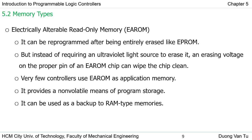The next type is EEPROM, which is similar to EPROM but instead of requiring UV light to erase data, it requires an erasing voltage to clear the data. Very few controllers use this type as the application memory. This type of memory is non-volatile, meaning data is stored permanently until we intentionally clear it. It can also serve as a backup to RAM.